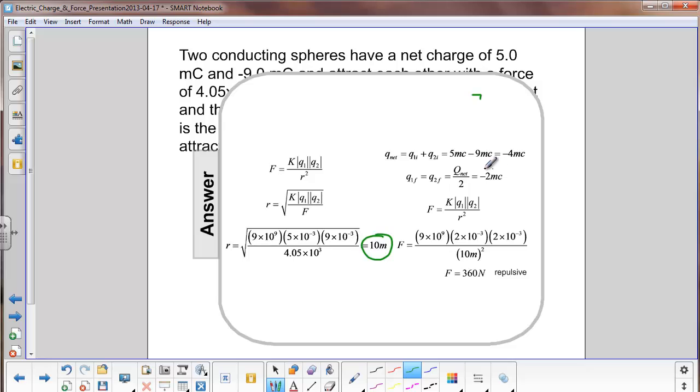We already found that the charge after they are touched and pulled away is negative 2 millicoulombs for both spheres. We now put that into Coulomb's law. We find out that the new force is 360 newtons, and as we found earlier, it's a repulsive force since both charges are negative.